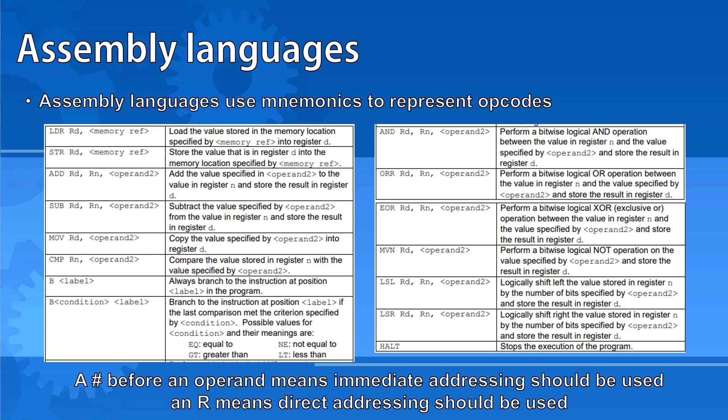Where you see reference to operand 2 in these instructions, that's because there's two possible ways of referencing the operand, with immediate referencing or direct referencing. If there's a hash before a number, then we're using immediate addressing and the actual value should be used.